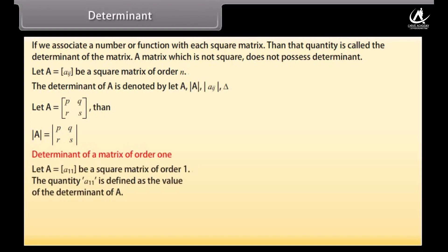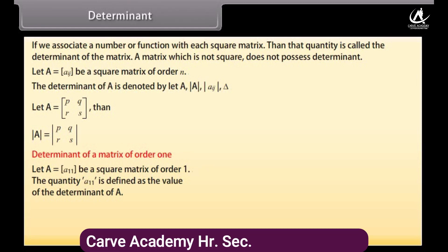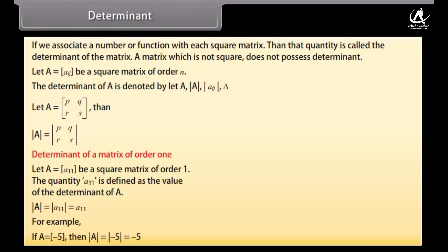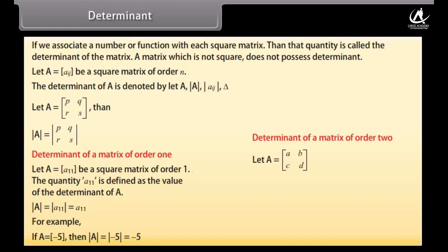Determinant of a matrix of order 1. Let A = [a11] be a square matrix of order one. The quantity a11 is defined as the value of the determinant of A, so det(A) = a11. For example, if A = [-5], then det(A) = -5.